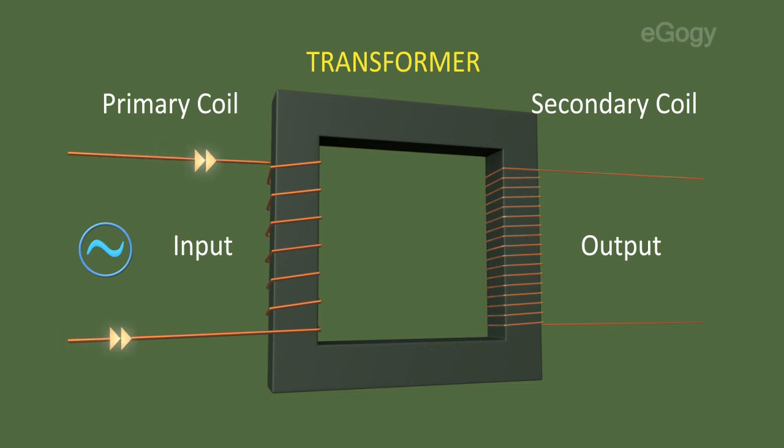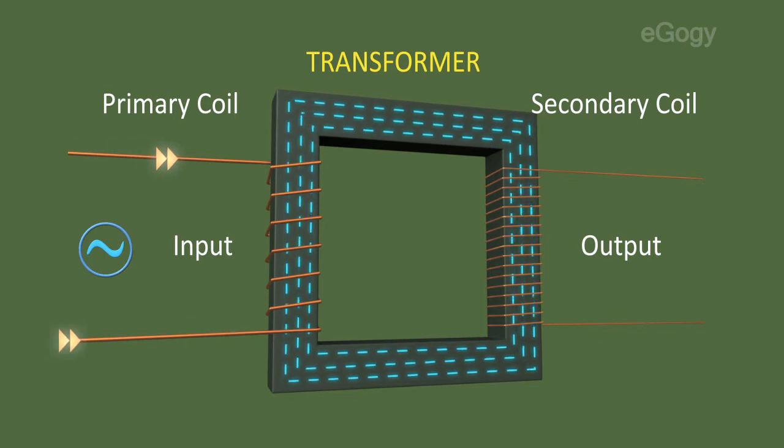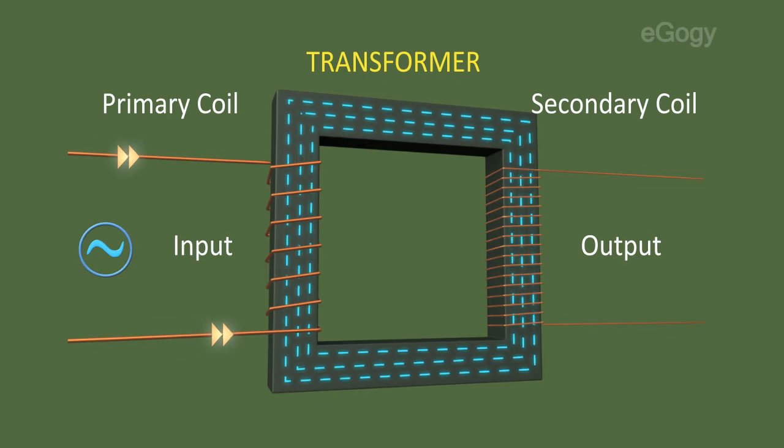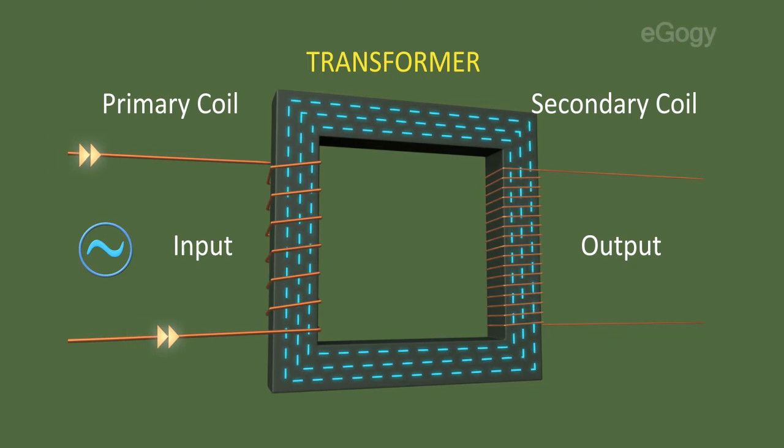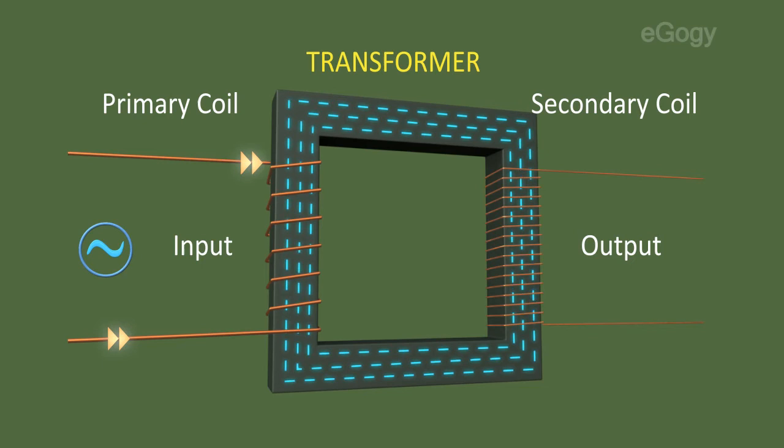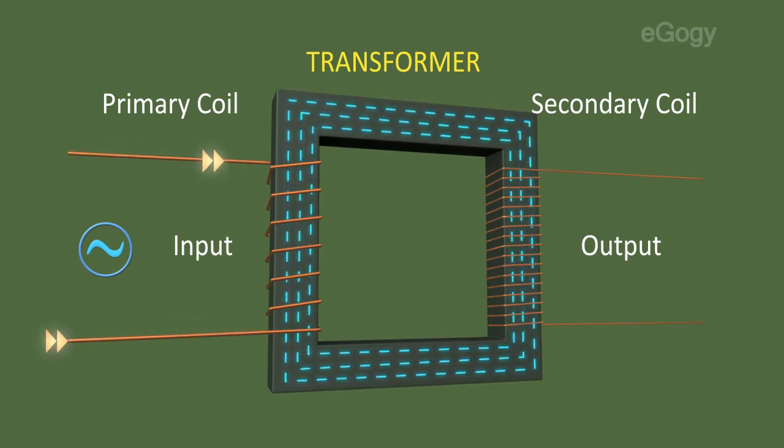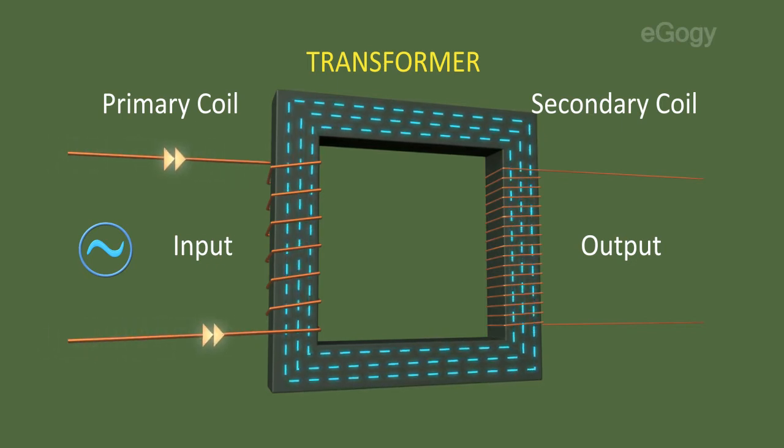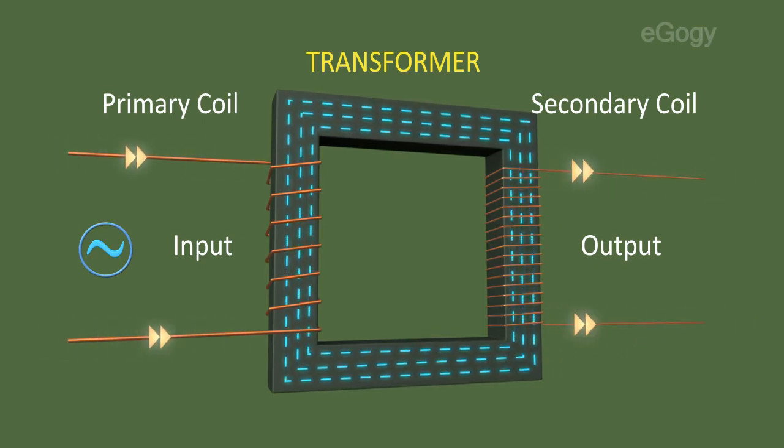Input AC in the primary coil creates magnetic flux in the soft iron core. The intensity and direction of the AC coil are continuously changing, and due to this, the induced flux is also a fluctuating one. Even though the secondary windings are in the same soft iron core, the flux also passes through each winding in the coil. Due to the change in magnetic flux in the secondary coil, there induces an EMF.